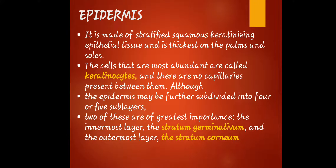The epidermis is made of stratified squamous keratinizing epithelial tissue and is thickest on the palms and soles. The cells that are most abundant are called keratinocytes. There are no capillaries present in the epidermis. Although the epidermis may be subdivided into five sub-layers, the two of greatest importance are the innermost layer called the stratum germinativum and the outermost layer called the stratum corneum.